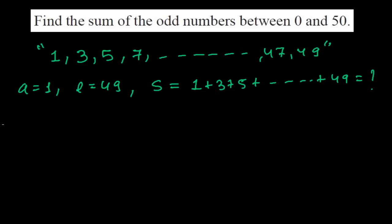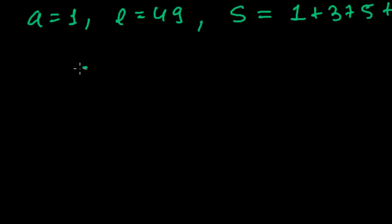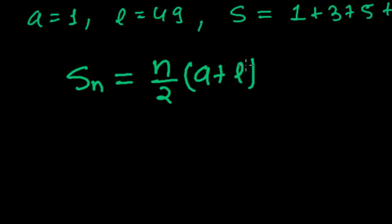Let me first write the sum of n terms formula. The sum of n terms formula is Sn equals n upon 2 times a plus l. Since the last term is given in this question, I am using the formula which contains the last term l.